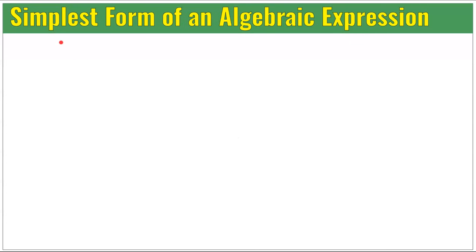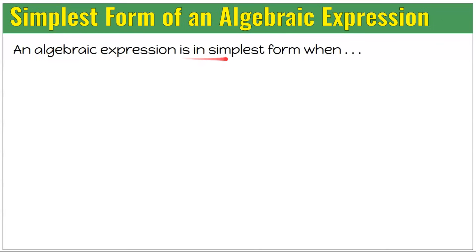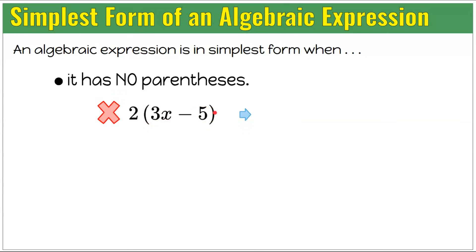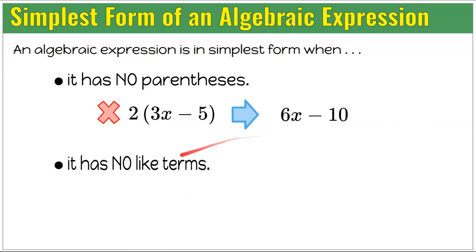Now let's talk about simplest form of an algebraic expression. An algebraic expression is in simplest form when it has no parentheses. This is not in simplest form because it contains parentheses: 2 multiplied by the quantity 3x minus 5. In simplest form, we distribute to get 6x subtract 10, which is an equivalent expression with the parentheses cleared.